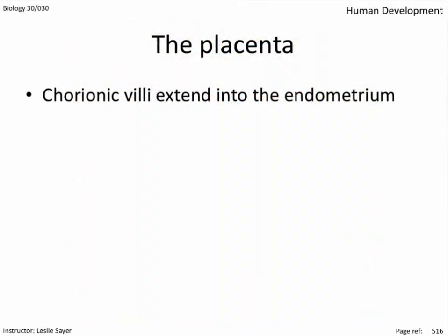The chorionic villi extend into the endometrium. A prenatal screening technology called chorionic villus sampling, or CVS, involves removing some placental tissue to perform a karyotype — a technology that allows a geneticist to check for chromosomal abnormalities. This allows for an earlier preview of the genetic health of the fetus between 10 and 13 weeks, compared to amniocentesis between 16 and 20 weeks. It carries the same risks — infection, spontaneous abortion, etc. — so it is only carried out if certain conditions warrant the risk, like the age of the mother or a history of genetic disorders.